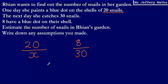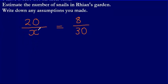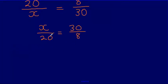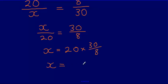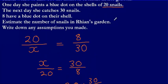The key idea is to equate these two proportions and then simply solve the equation, in exactly the same way as before. Flip both fractions upside down first: X over 20 equals 30 over 8. Then multiply both sides by 20, so X equals 20 multiplied by 30 over 8. That gives us X equals 75. So the total population of snails in Rhian's garden is 75.